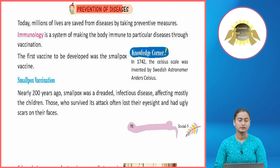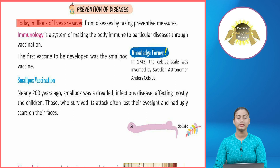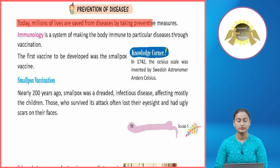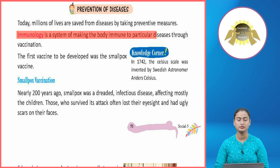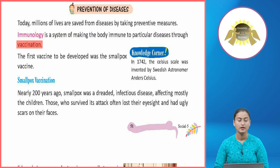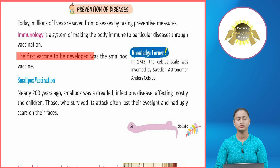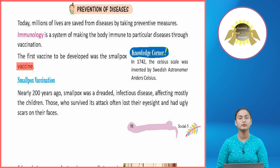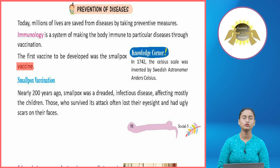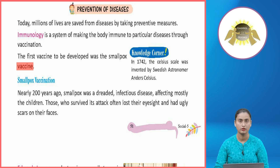Prevention of Diseases: Today, millions of lives are saved from diseases by taking preventive measures. Immunology is a system of making the body immune to particular diseases through vaccination. The first vaccine to be developed was the smallpox vaccine. Different vaccines are available today — if injected, your body becomes immune, so even if the bacteria infects you, it will have no effect.